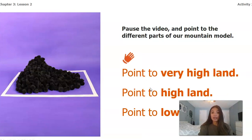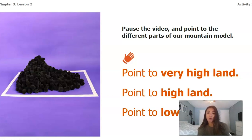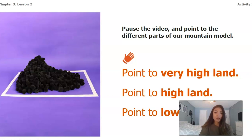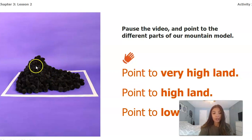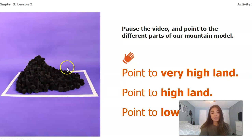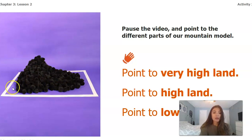Go ahead and pause the video — without doing anything on your worksheet yet — and just point to the different parts of the mountain. Point to a very high part of land, a part of high land, and an area of low land. If I were looking at this, I would say areas of very high land would be like the very tip top of the mountain. Areas of high land would be this middle section — raised up but not as tall as the very tip. Areas of low land would be the very bottom, that area underneath the mountain.